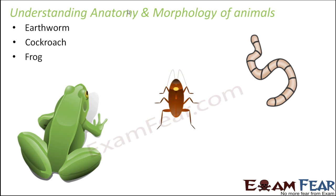Talking about these 3 animals — they are 3 different varieties. One is an insect, the other one is a worm, and the third one is a vertebrate, so they are 3 different categories. Once you know about all 3, you can have some basic idea about the other phyla under the animal kingdom. You will understand that as an animal belongs to a higher phylum, the more complex things are. Keeping in mind the evolutionary trend, we chose these 3 animals and now we are going to talk about each of them in detail. We will start our discussion with earthworm.